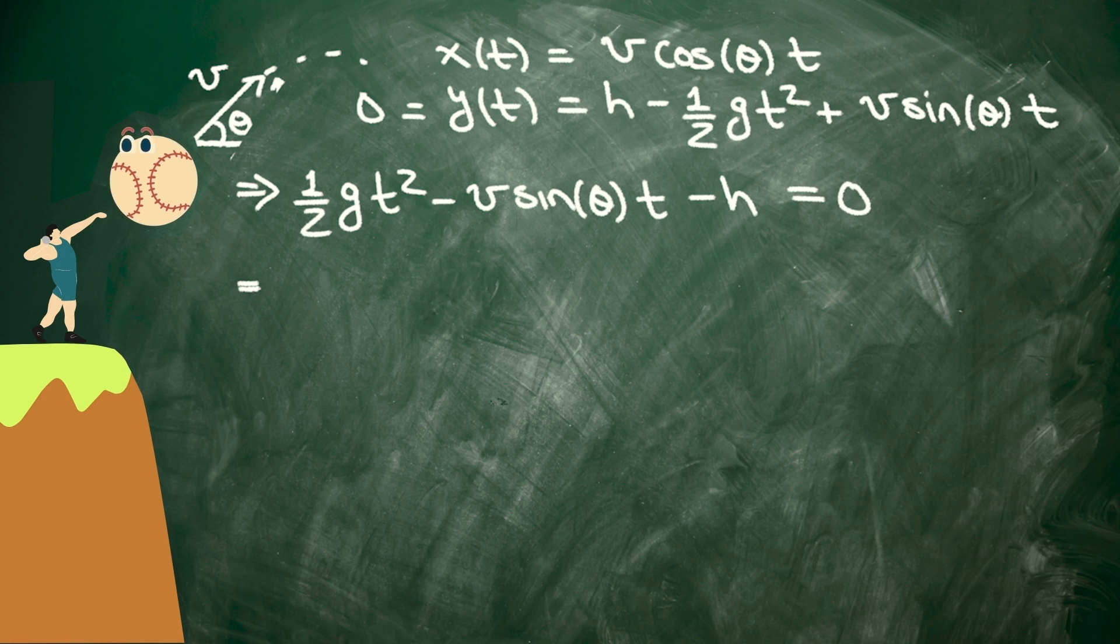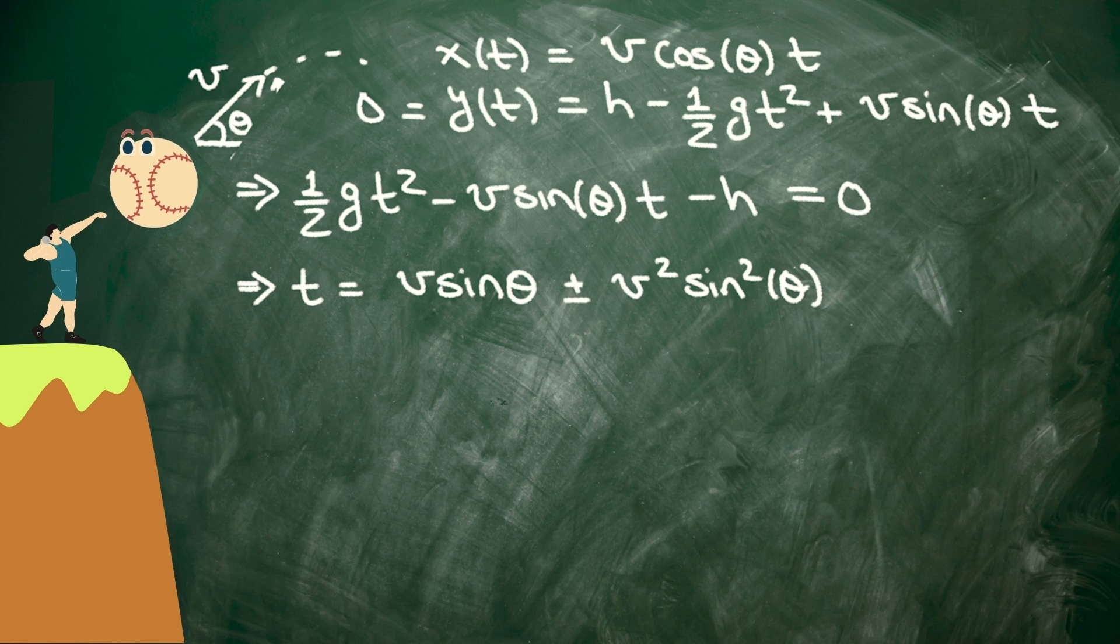And we can solve using the quadratic formula. We've got t equals negative b, that's v sine theta, plus or minus the square root of b squared minus 4ac, that's v squared sine squared of theta, plus 2gh.